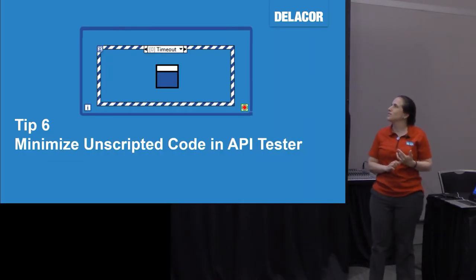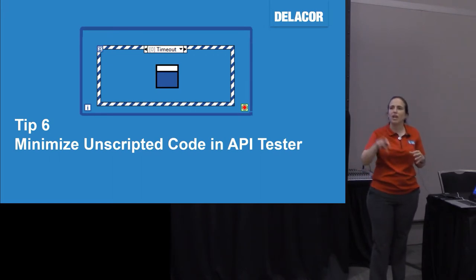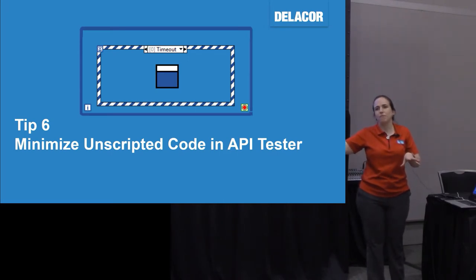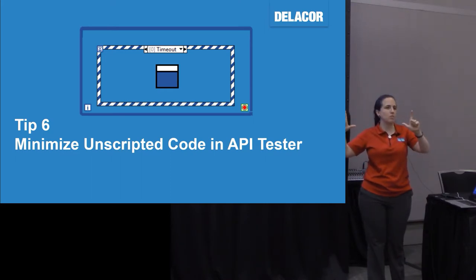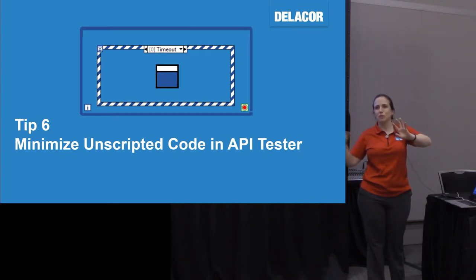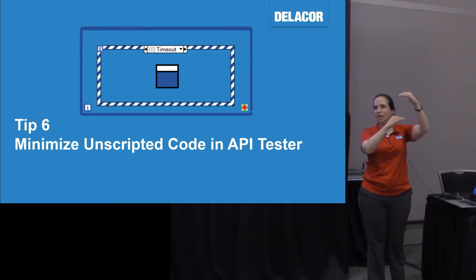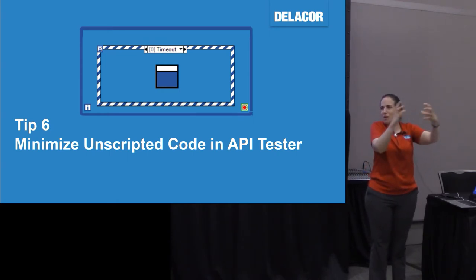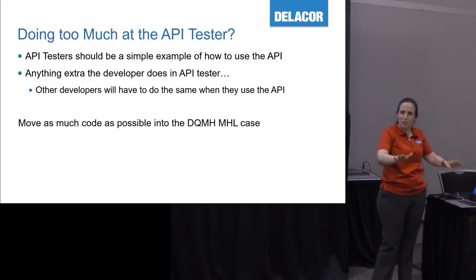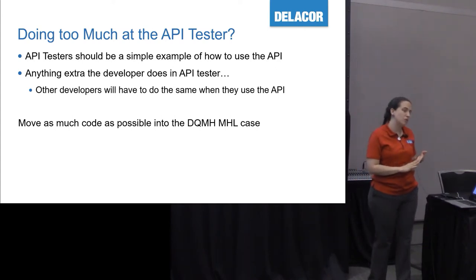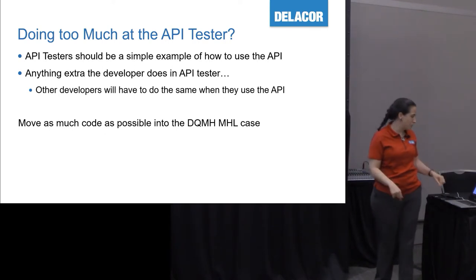One tip for the API tester: minimize unscripted code on the API tester. Anything you're having to write as code on the API tester, the developer consuming your API will also have to write. The API tester should be a simple example of how to use the API. Anything extra the developer does in the API tester, they're going to have to do in their calling code. So move as much code as possible to the main VI.